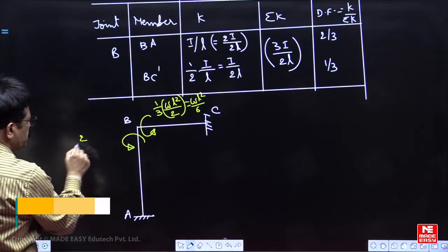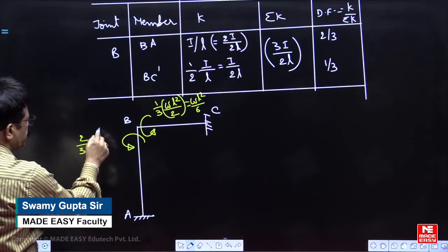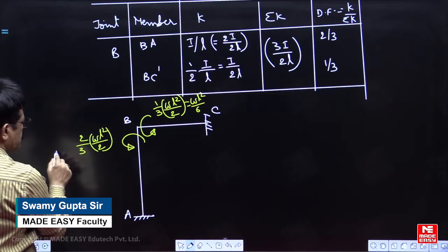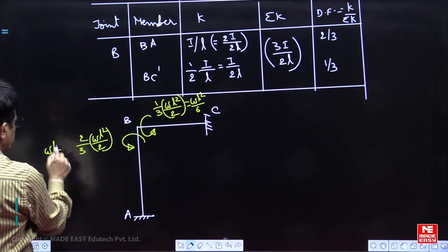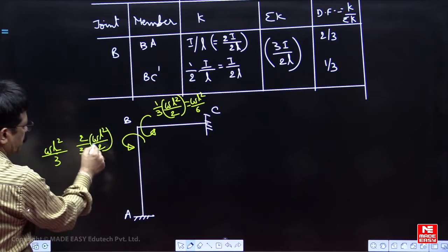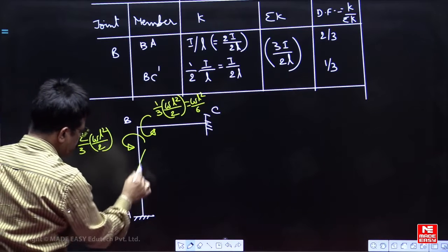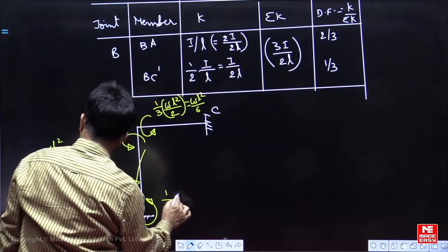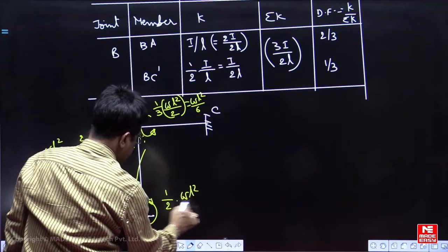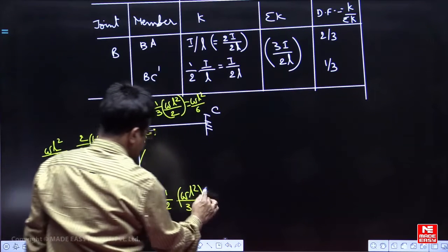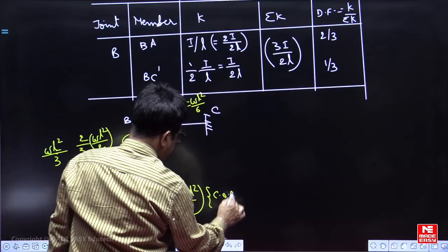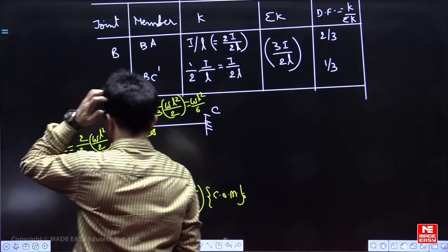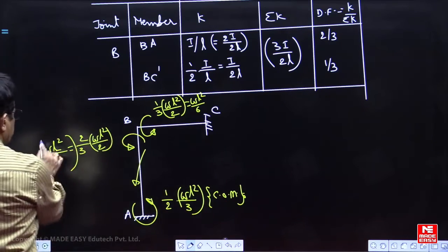How much is that? Two thirds of WL square by 2. You will get its value is WL square by 3. Out of this, how much is carried over in the anticlockwise direction? Half of that, half of WL square by 3. This we call it as COM, carry over moment. This is what you will get.